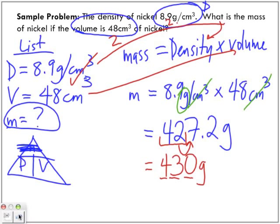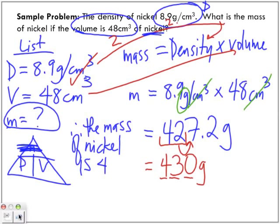Round it off correctly. And then, because we need a statement, because it is a word problem, it's a therefore statement. What was the object? Nickel. What were we trying to find? We're trying to find the mass. So therefore, the mass of nickel is 430 grams. And there is your final mark.